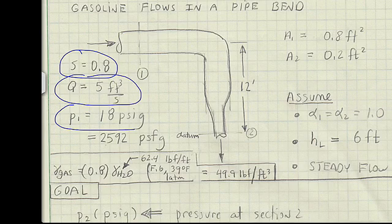The flow rate is 5 cubic feet per second of gasoline through the bend. The inlet pressure is 18 psi g.